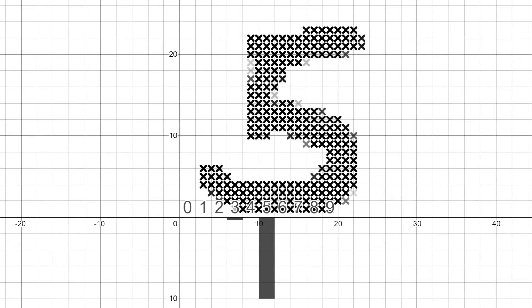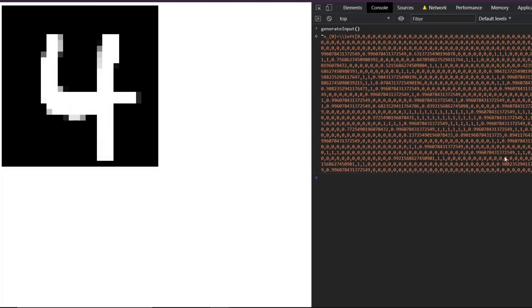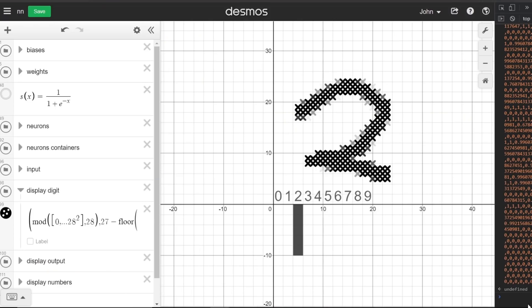Another problem is changing our input would require manually modifying values one by one in a 784 length array, so I wrote a program real quick to simplify the process. This lets you draw onto a grid and use the values we created as an input to the network.